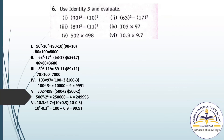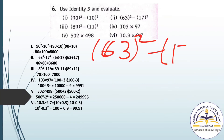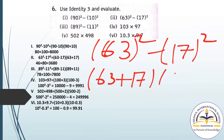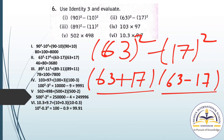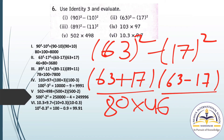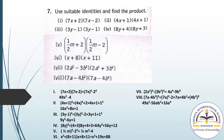Question number 2: 63 square minus 17 square. We write (63 + 17)(63 - 17). That is 80 multiplied by 46, giving 3680 as the answer. In this manner you have to solve these questions.